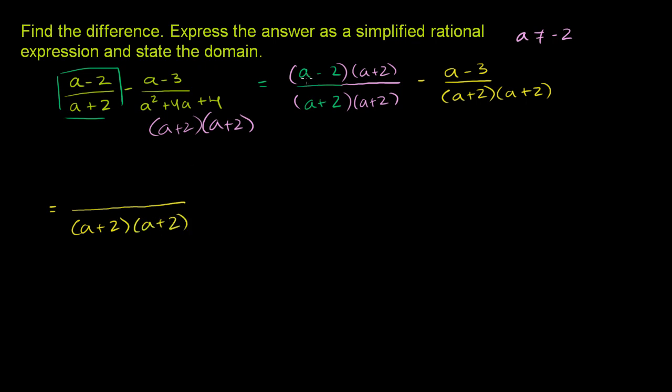Now this numerator, if we have a minus 2 times a plus 2, we've seen that pattern before. This is going to be a squared minus 2 squared, or a squared minus 4. You could multiply it out. The middle terms cancel out. The negative 2 times a cancels out with the a times 2, and you're just left with a squared minus 4.